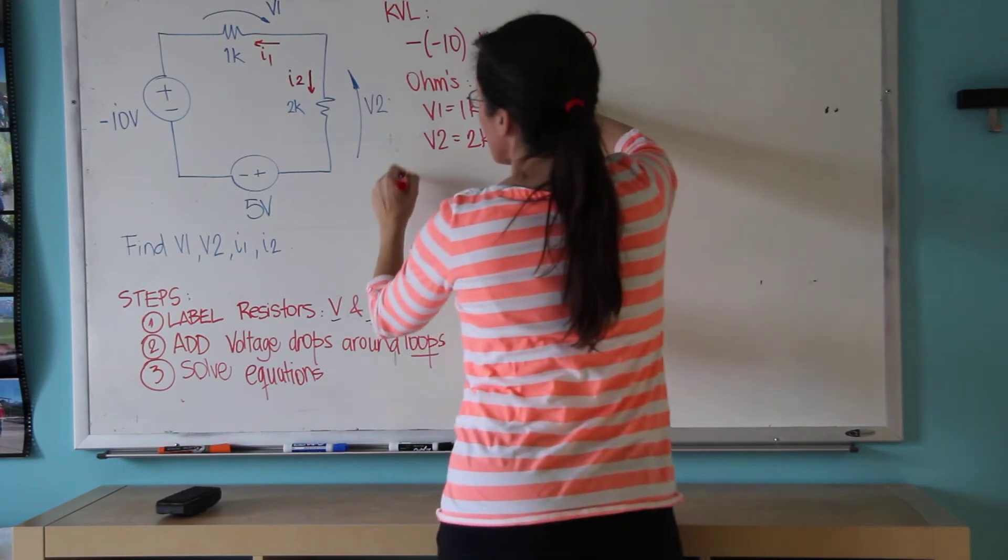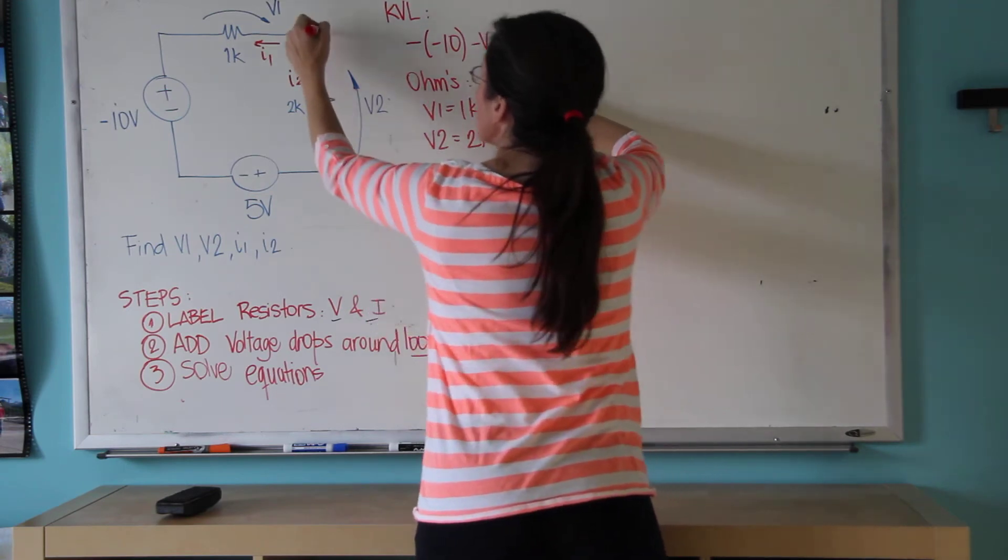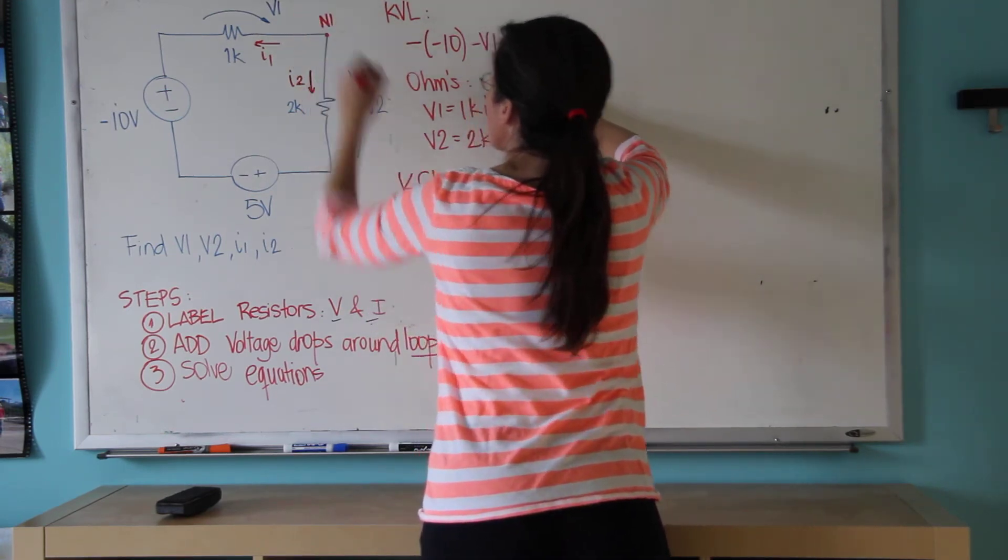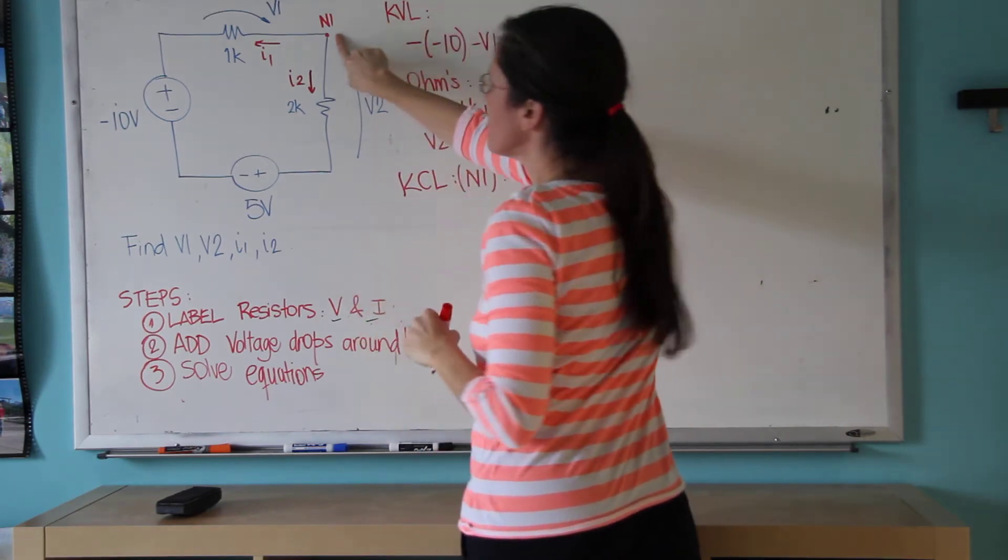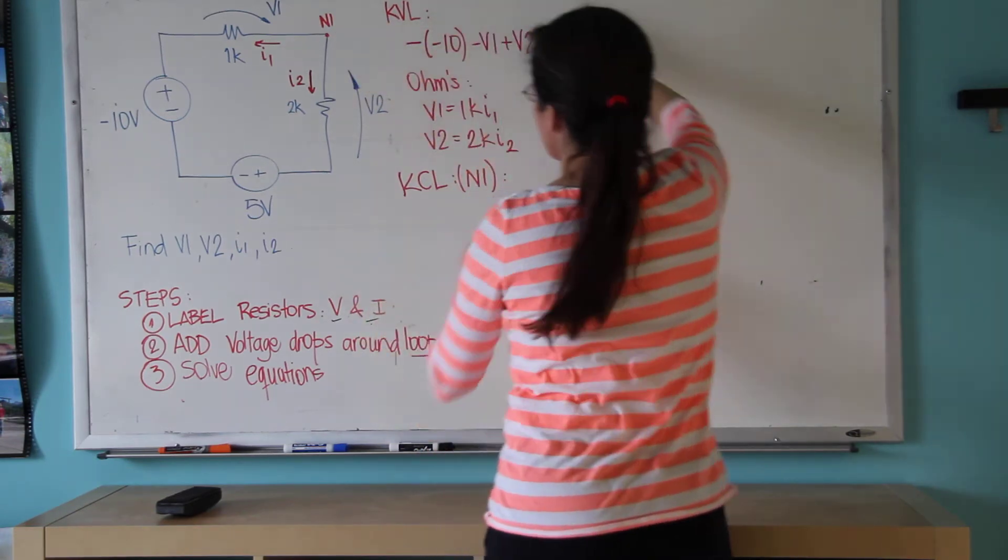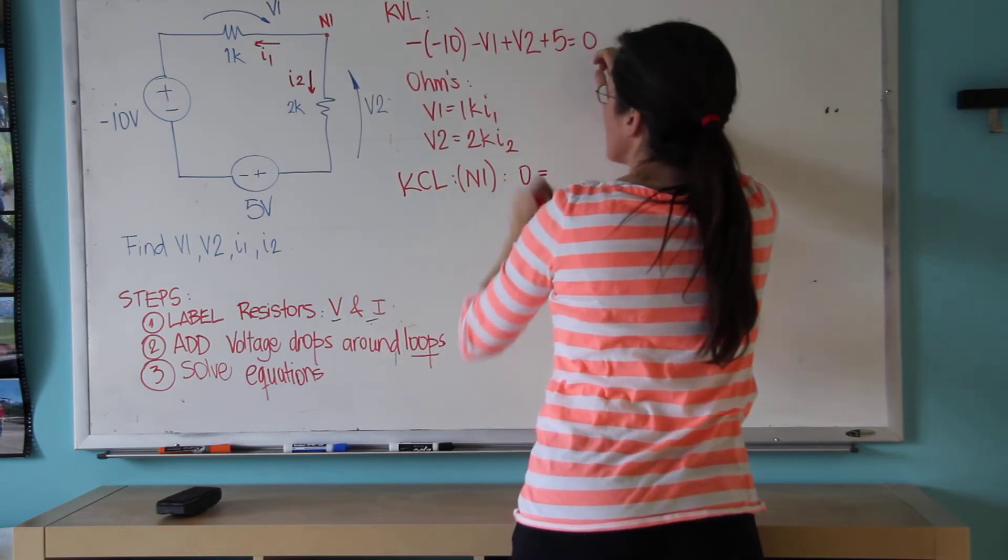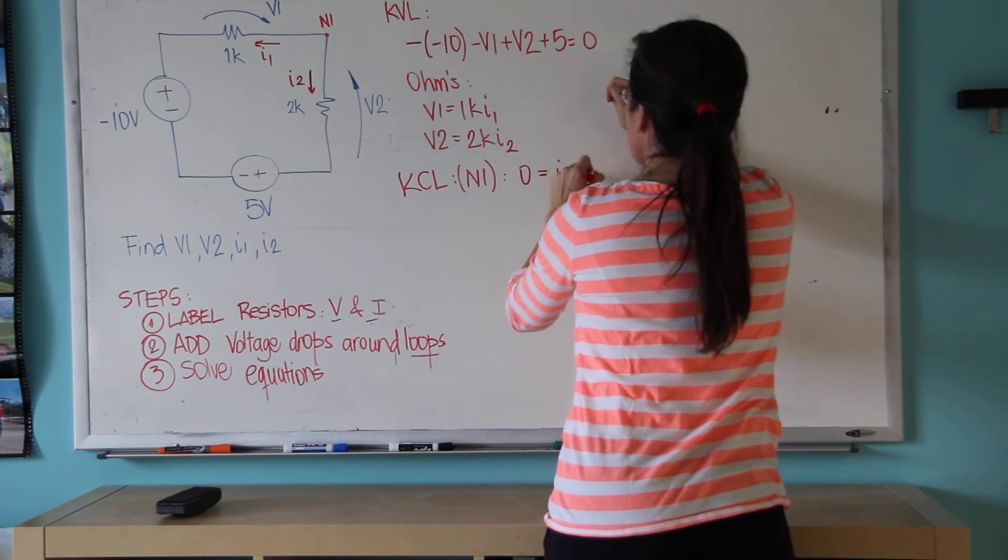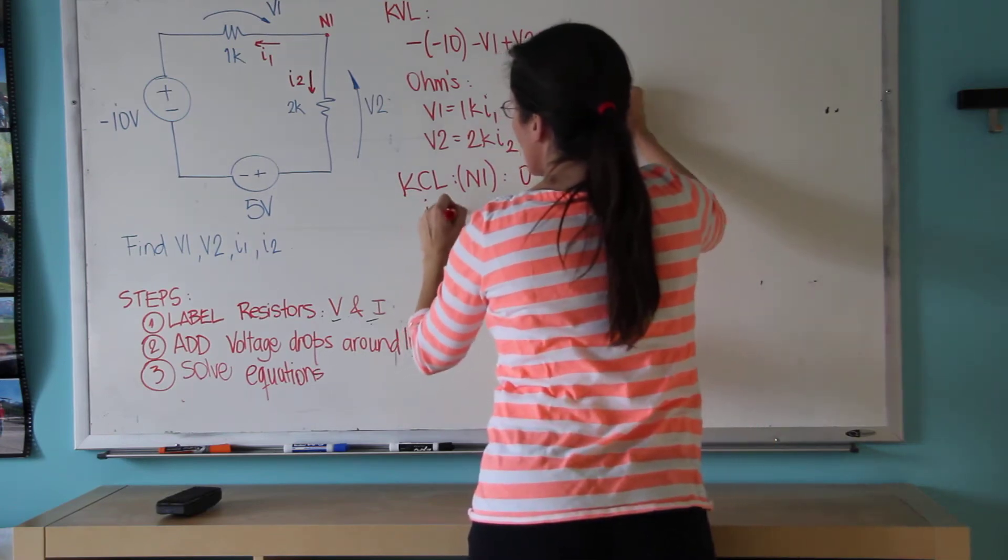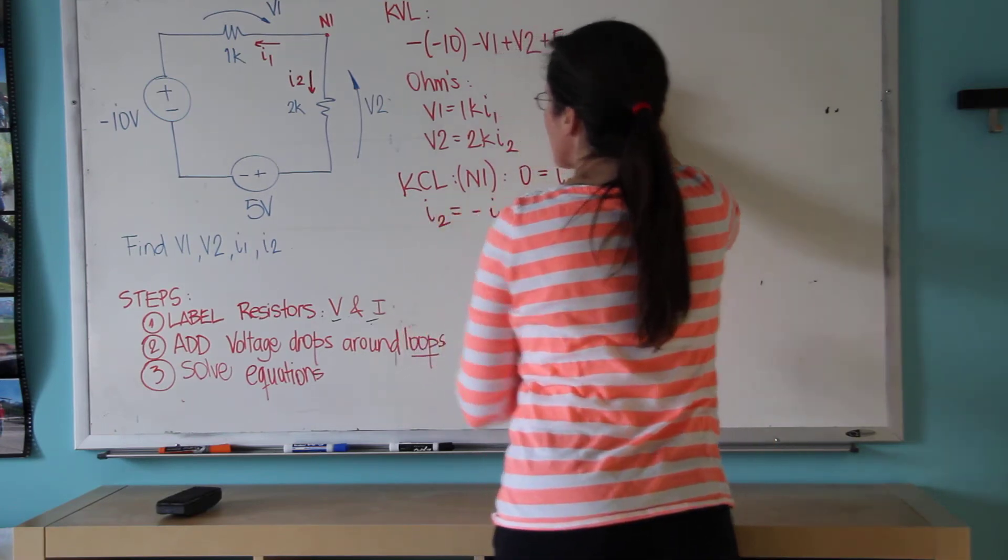And then I use KCL on this node here, node 1. KCL on node 1 tells me that the sum of all currents coming in, there are no currents coming in, equals sum of everybody coming out, I2 plus I1. And therefore, I2 equals minus I1.